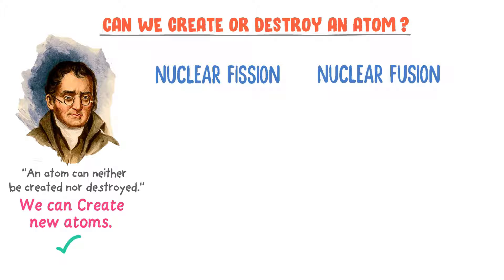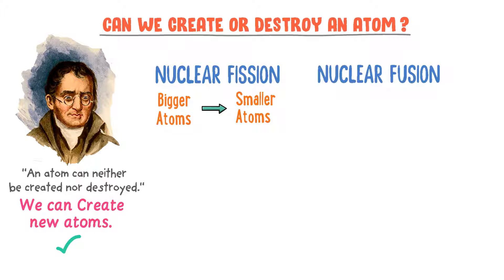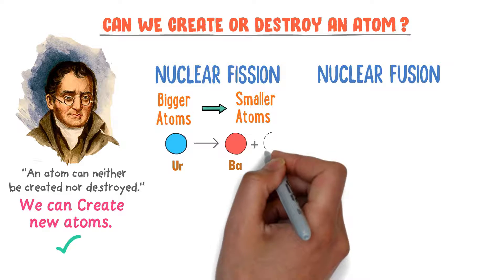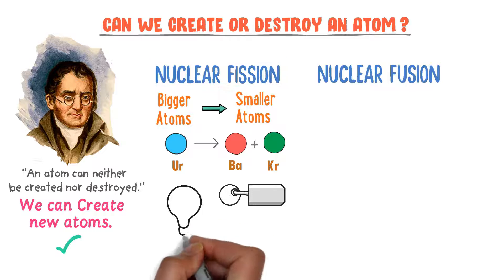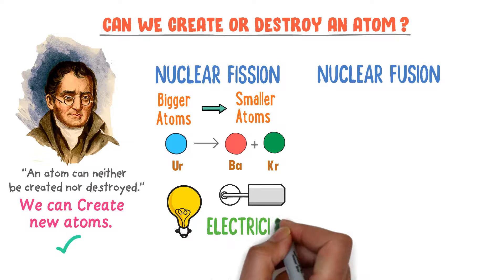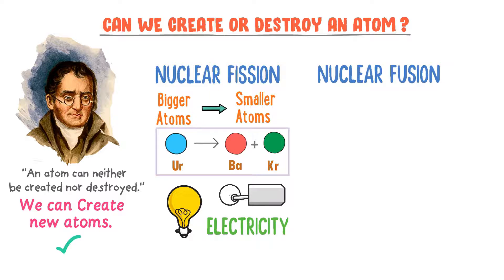In nuclear fission reaction, bigger atoms are split up into smaller atoms. For example, one uranium atom is broken down into barium-141 and krypton-92 plus a huge amount of energy. Nuclear fission reaction is used in various sectors like in nuclear plants to generate electricity. Thus, we can create atoms like barium-141 and krypton-92 of lighter elements by breaking larger nuclei.